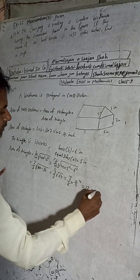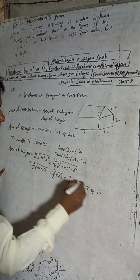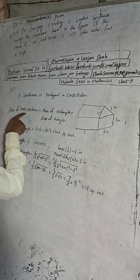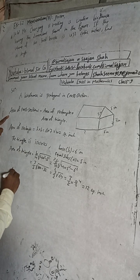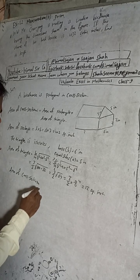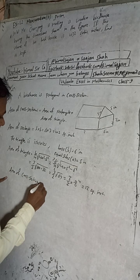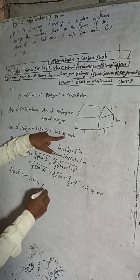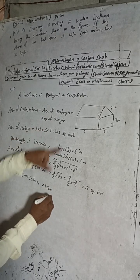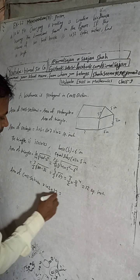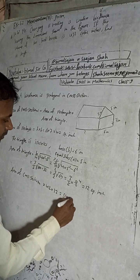Now we have area of triangle equals 12 square inches and area of rectangle equals 42 square inches. So area of cross section equals 42 plus 12, which equals 54 square inches. We have found the area of cross section.